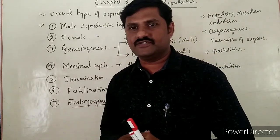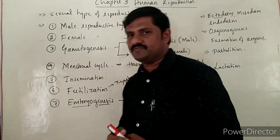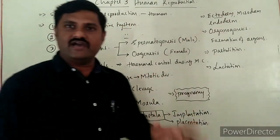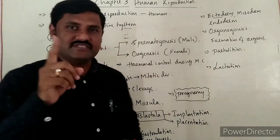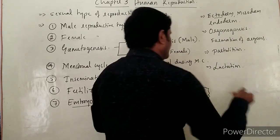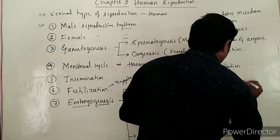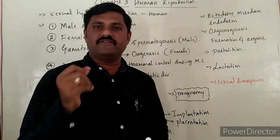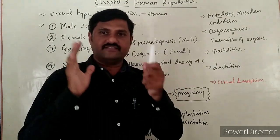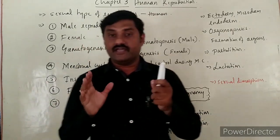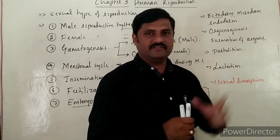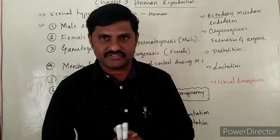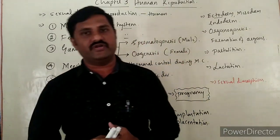Before studying the male reproductive system, we must know that human beings follow sexual type of reproduction and exhibit Sexual Dimorphism. Sexual dimorphism is the phenomenon in which we are able to differentiate males from females by seeing their external features. This is an important point to note. We also come across two important terms: prenatal events — events occurring before the birth of the baby — and postnatal events — events occurring after birth, which constitute the lifespan of the individual.